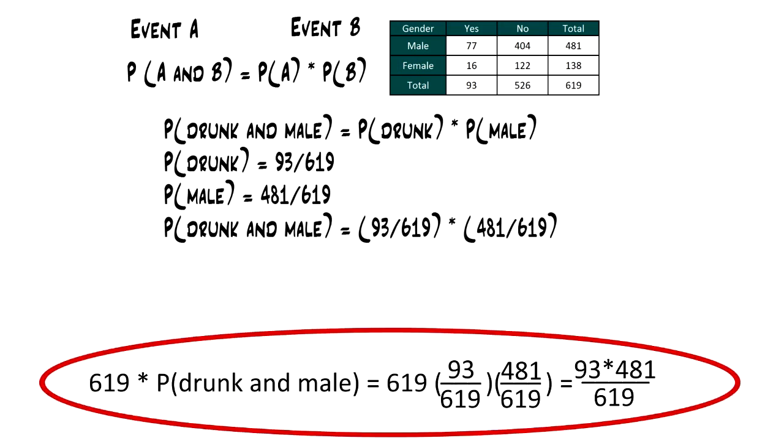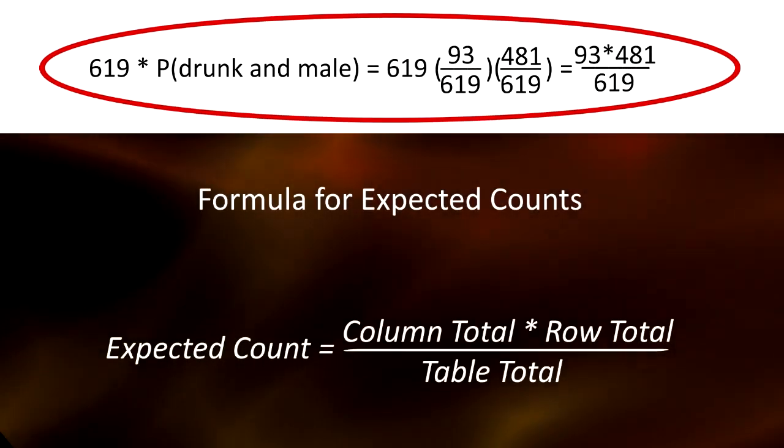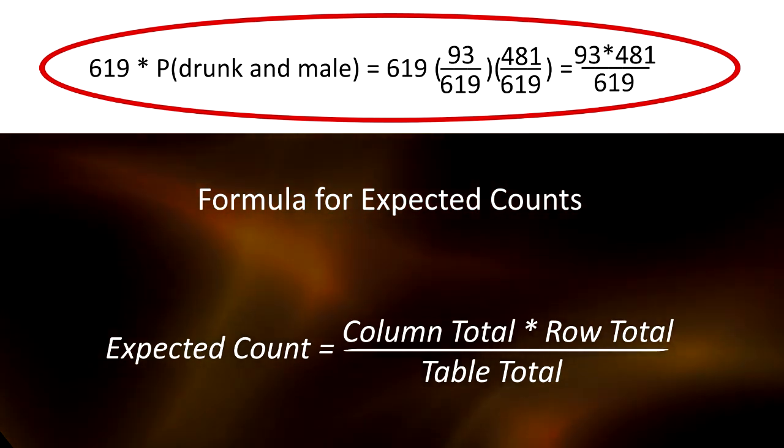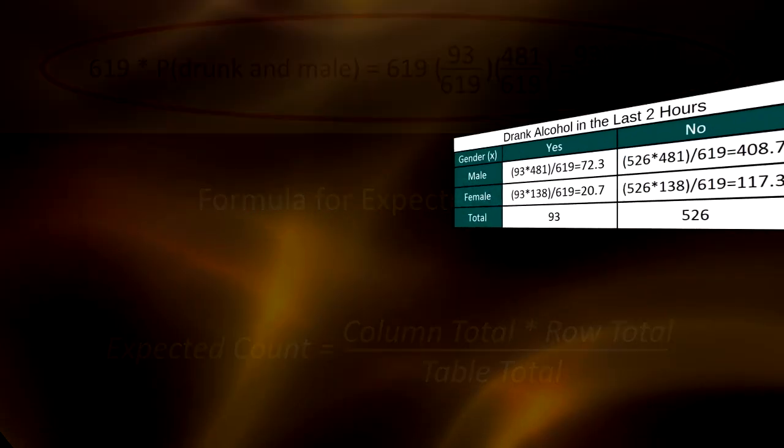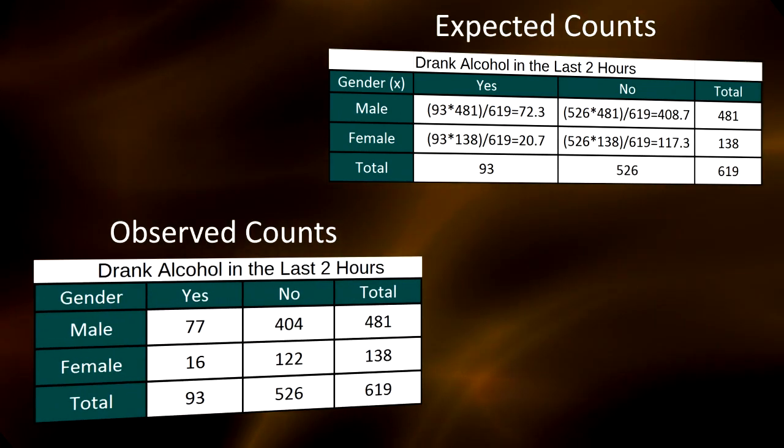So, the formula for calculating expected counts is column total times row total divided by table total. Following this formula, here are the complete tables of expected and observed counts.